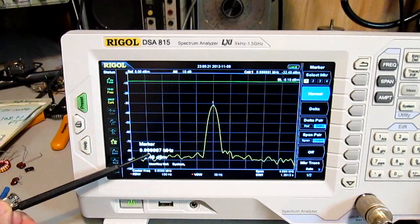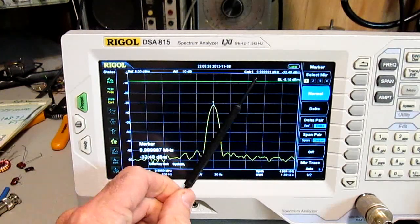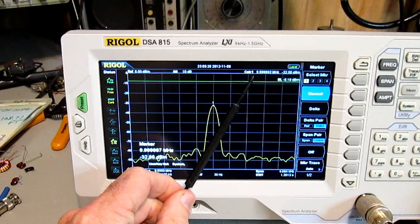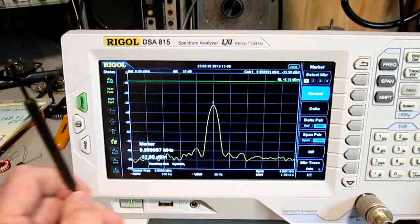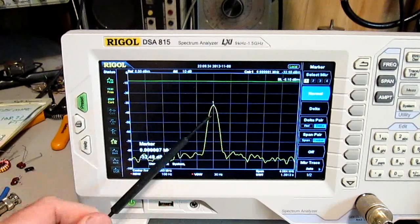what you read here, 9.999987, is different than up here where it says counter. It's measuring 9.999992. So it is different. It is actually trying to measure the frequency here versus just telling you what the marker is.